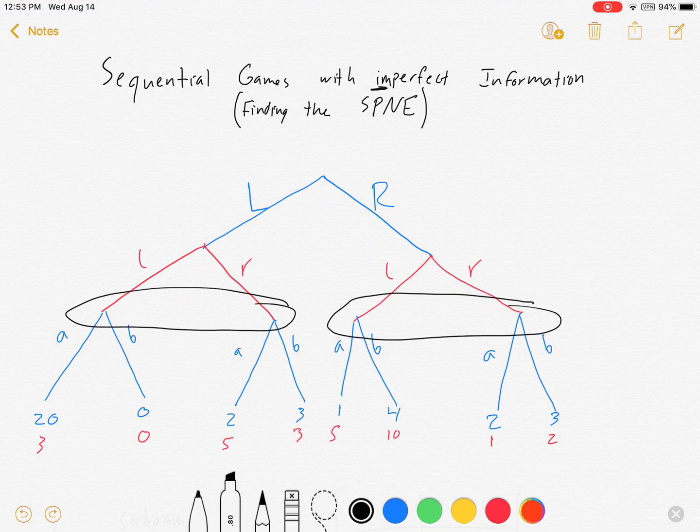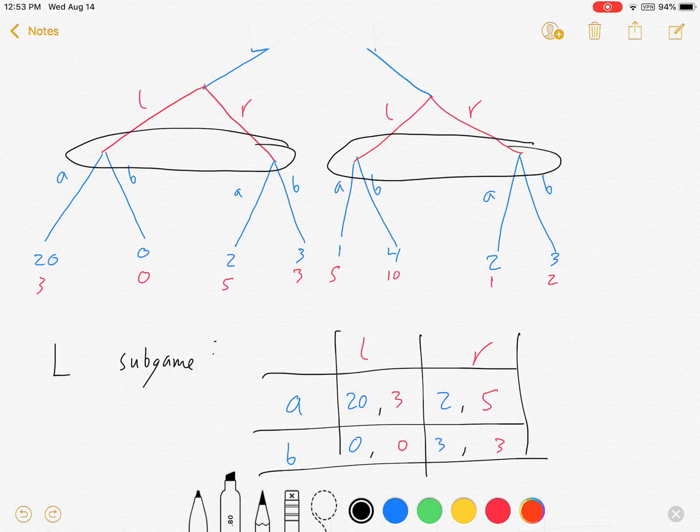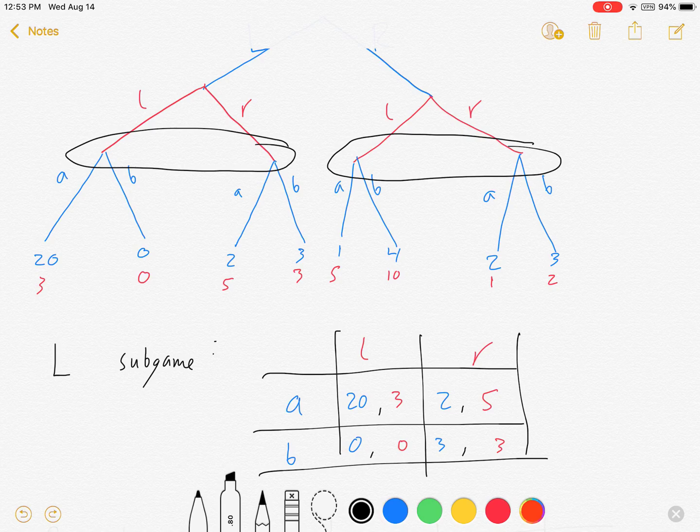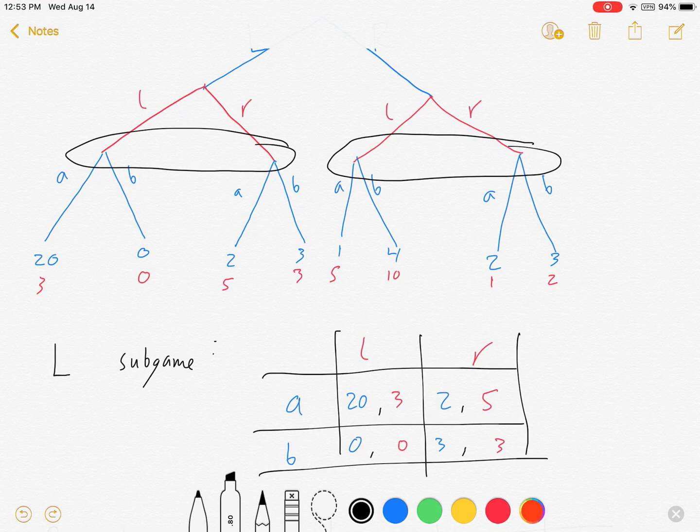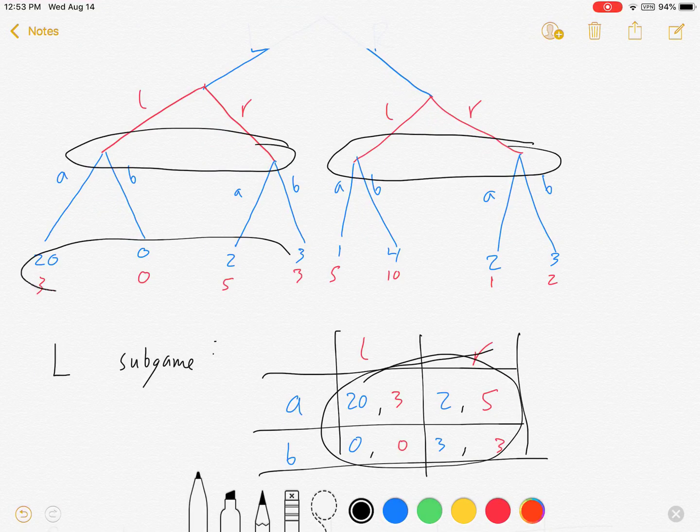So let me show you a little bit what I mean by that. If blue plays left, then we will find ourself in a sub game that looks like this, where if red plays L and blue plays A, blue gets 20. If red plays L and blue plays B, blue gets zero, and so on. All of these values in here come from these payoffs.